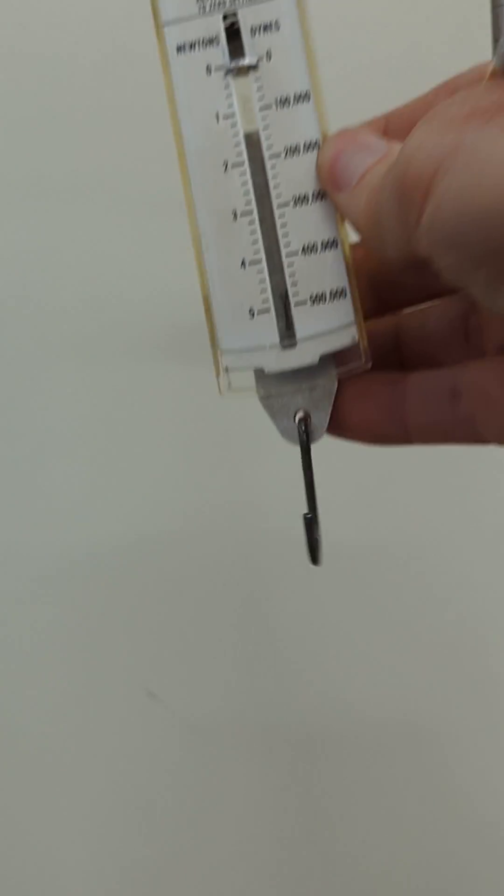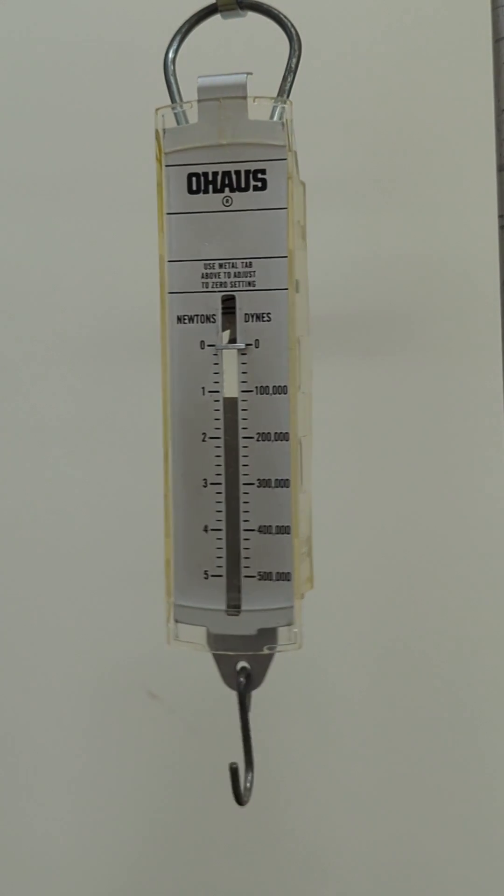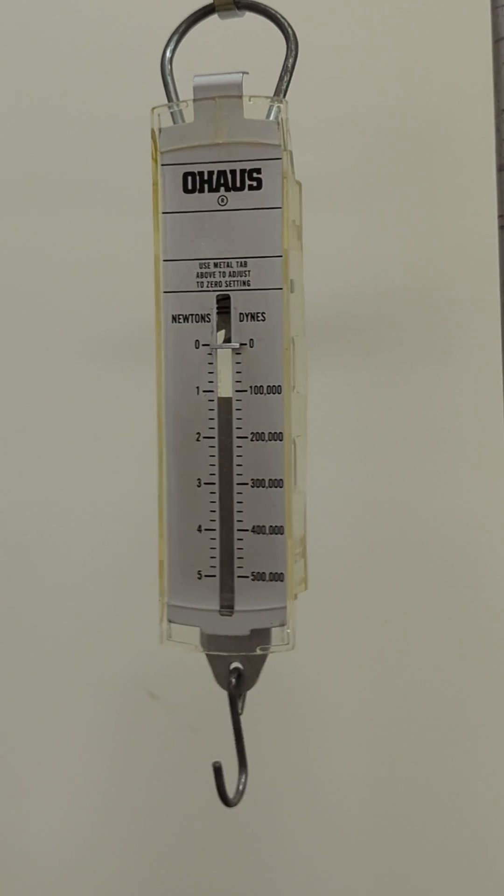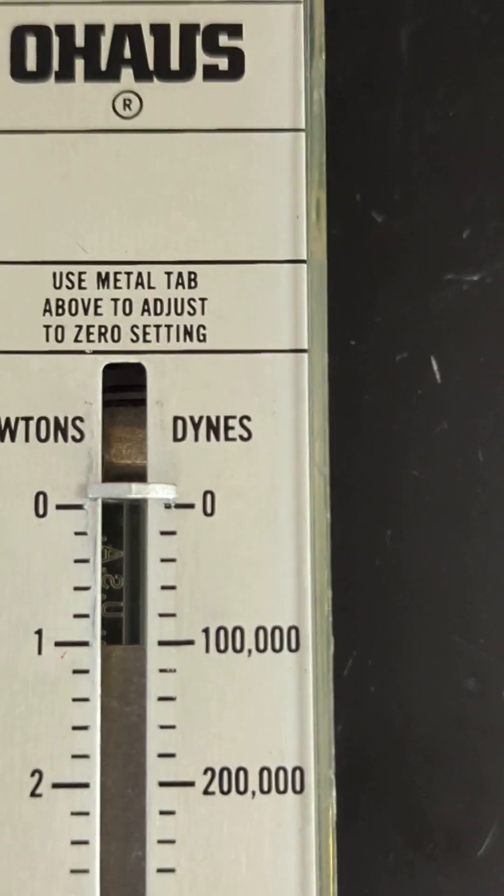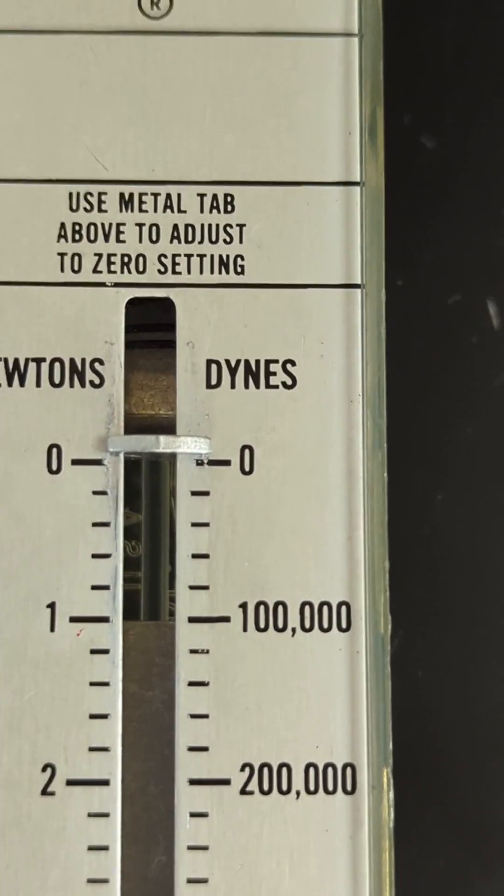So now this is all set up to use horizontally or vertically. But if we go to a horizontal setup, if we take it and lay it down here, you can see that it is no longer calibrated. I did not slide the metal there at all.